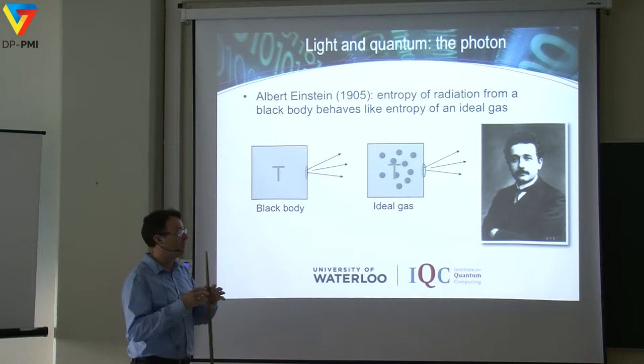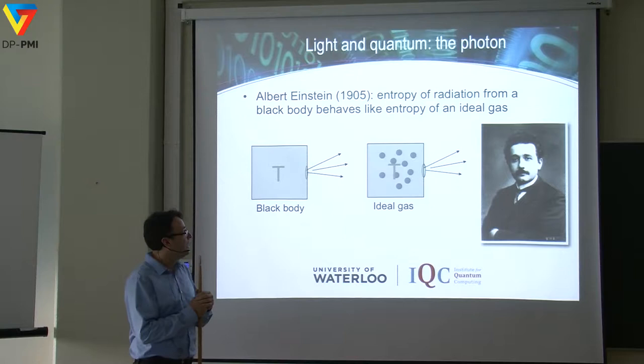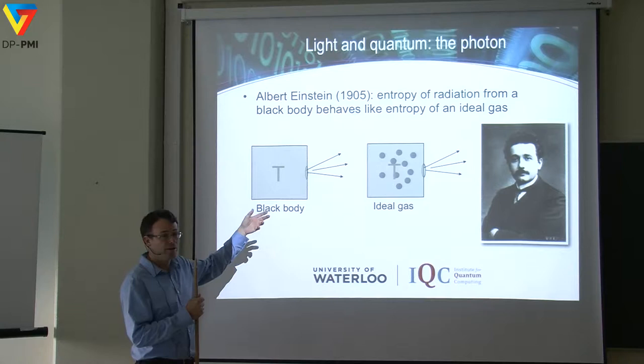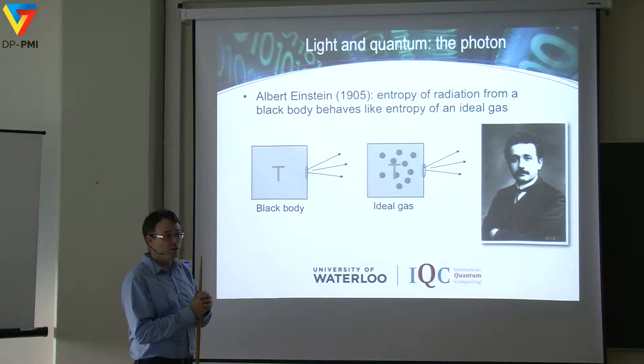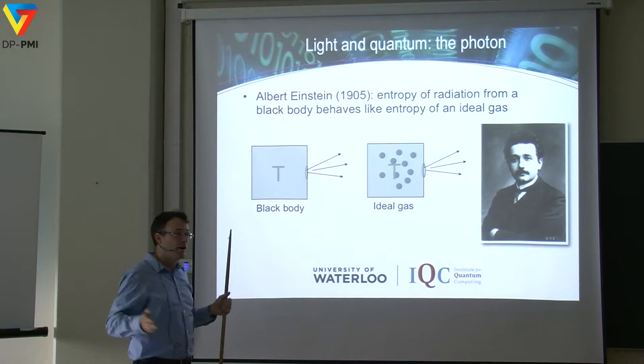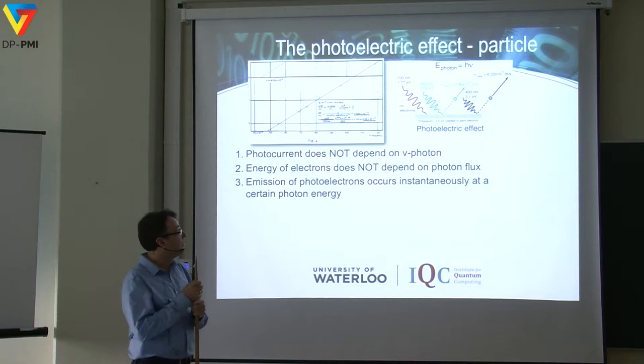Later on, Albert Einstein put a solid underlying theory beneath Planck's hypothesis. He compared black body radiation with an ideal gas — well known at the time as being about particles moving around statistically. From this comparison, he was able to show that the only way out is to conclude that black body radiation is also made up of particles, leading to a solid proof that light consists of photons — the light quanta.